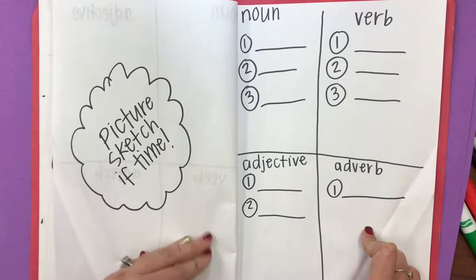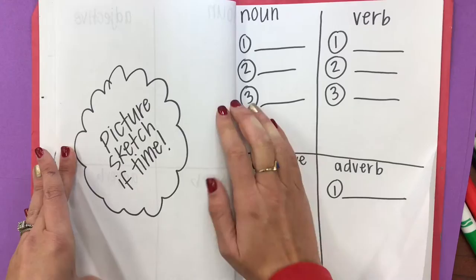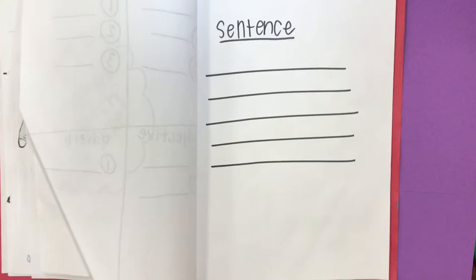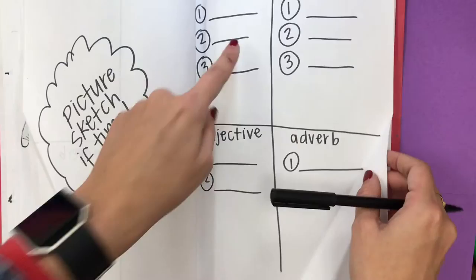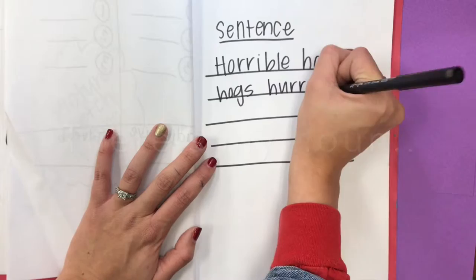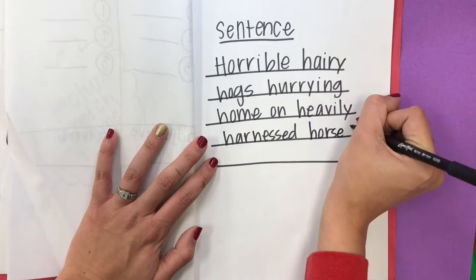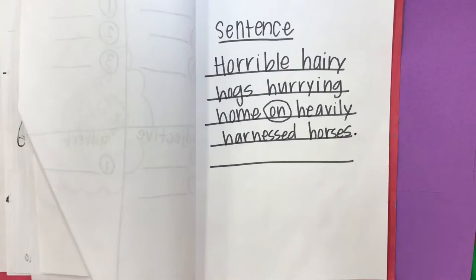I will put that sheet up on the board before we get started. If you finish in time, you can go ahead and start sketching here. We will be turning this into a collage painting next week, so this will just be kind of a brainstorm sketch. On the next page, you're going to use all of that brainstorming to write a sentence. So you might write: horrible, hairy — those are two adjectives — hog, there's my noun, hurrying, there's my verb, heavily, there's my adverb, on harness horses. You'll notice I have to use a word that doesn't begin with H sometimes. That's okay — you can use one or two.